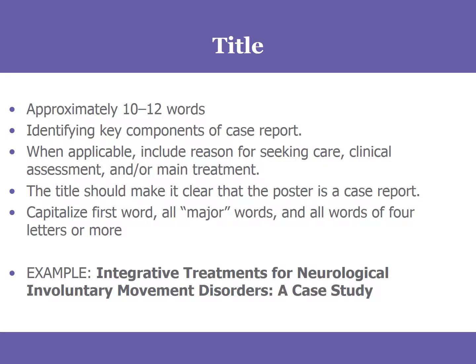You're going to start with a title that should be about 10 to 12 words, and that should include the key components of the case. So it might explain why the particular patient or group sought care, what assessment was done, and or what treatment existed. It should focus on what was done and who it was done with rather than the results or findings or outcomes, which will be reported in the body of the abstract itself.